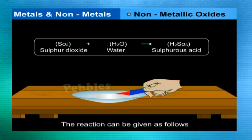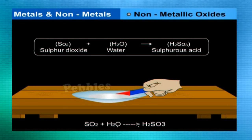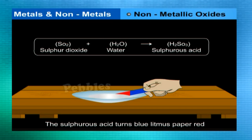The reaction is: sulphur dioxide SO2 + water H2O → sulphurous acid H2SO3. Sulphurous acid turns blue litmus paper red. Generally, oxides of non-metals are acidic in nature.